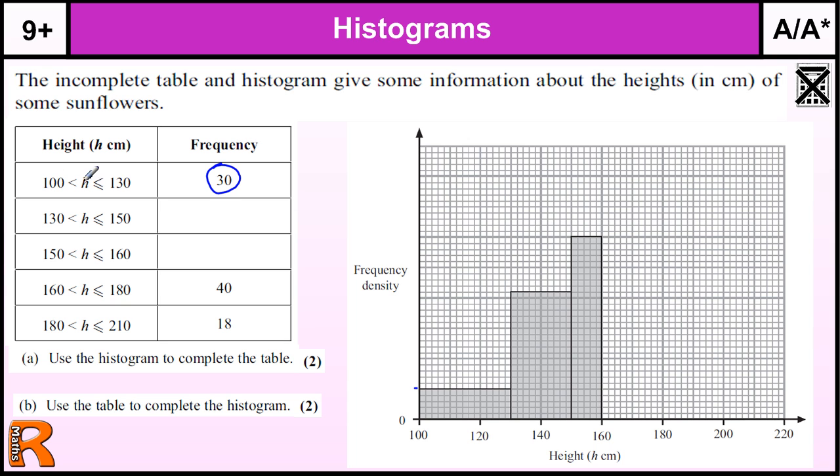The standard way of dealing with histograms is to work out the widths of each group. So this group is 30, this is 20, this is 10, this is 20, and this is 30. Because the frequency is the area underneath or in the bar, if I know that it's 30 wide and the frequency is 30, I know that its height must be 1, because the width times the height makes the frequency. So this is 1 high.